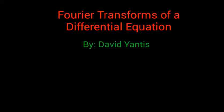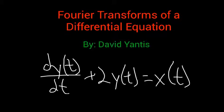Today I'm going to talk about how to use Fourier transforms to solve a differential equation. The equation I'm going to use today is dy/dt plus 2y(t) equals x(t).